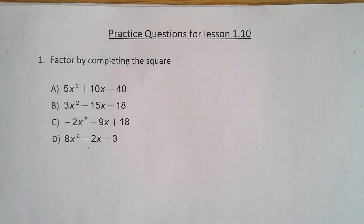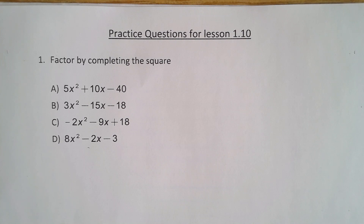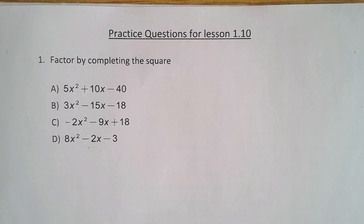Yesterday we did Lesson 1.10, which is the seventh of seven total methods of factoring. It's called completing the square. What it does is it allows us to factor a trinomial of our standard form when it's difficult — a Munchkin number — or if it takes too long, it's too cumbersome, or near impossible. We can still try to factor by completing the square. Also, completing the square shows us if something fundamentally is factorable or not.